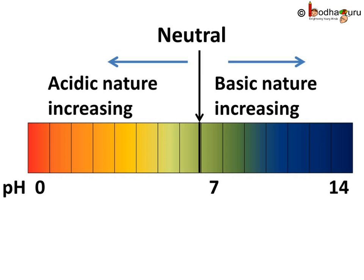Hello everyone. How can we know how strong a given acid or base is? We already know pH of a neutral solution is 7, and pH below 7 means acidic whereas pH above 7 means basic. Thus on the pH scale we can measure pH generally from 0, which is very acidic, to 14, which is very alkaline. So pH should be thought of simply as a number which indicates the acidic or basic nature of a solution.